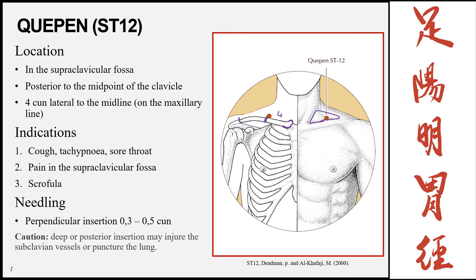Most indications for this point relate to its location. Being local to the lung area, it can be used for cough and tachypnea. Being close to the throat, it can treat sore throats. It can also be used for pain in the supraclavicular fossa and for scrofula. The insertion is perpendicular, 0.3 to 0.5 cun.